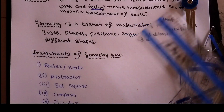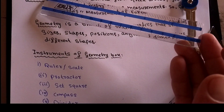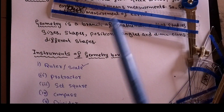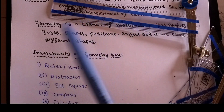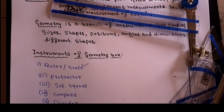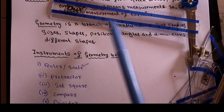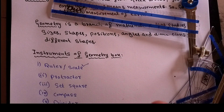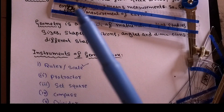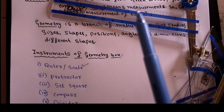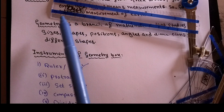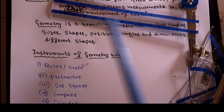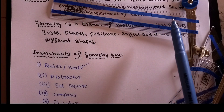The first tool we have is the scale, also called a ruler. With the help of the scale, we can draw straight lines or line segments. We use the scale to draw different lines and line segments - as many as we want. The scale has numbers, that is numerical values, in centimeters or inches. So we have the scale with us.